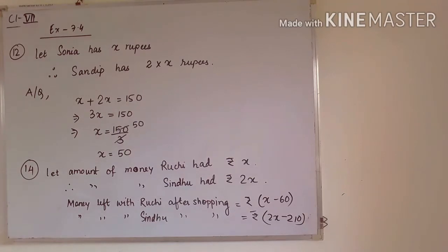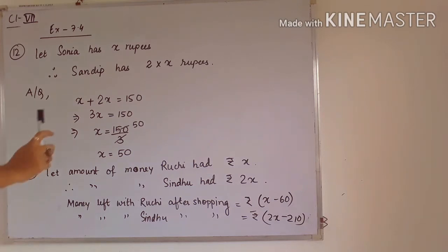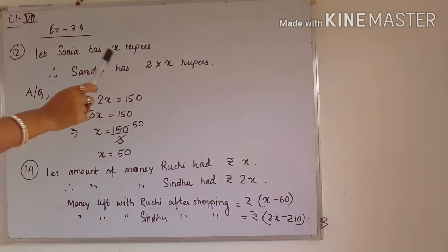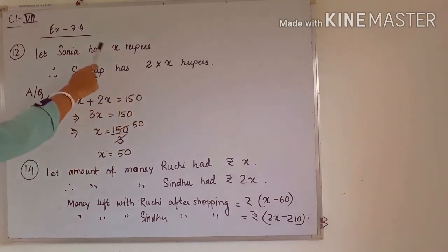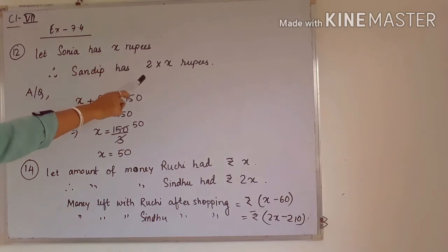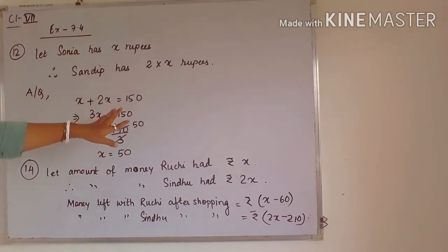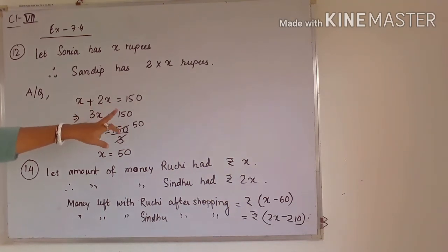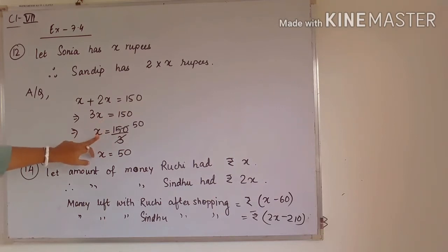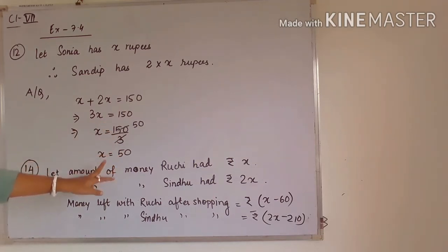Question number 12: Sandeep has twice the money that Sonia has. Let Sonia have x rupees; therefore Sandeep has 2x rupees, because it is double that of Sonia. Also, one more important thing is given: if we add the 2 amounts, we get 150 rupees. So according to this condition, we can write x plus 2x is equal to 150. Therefore 3x equals 150, meaning x equals 150 by 3, and the answer is 50.